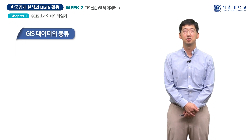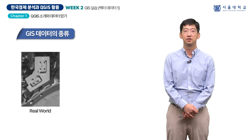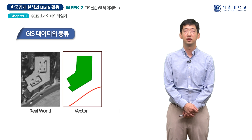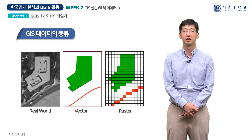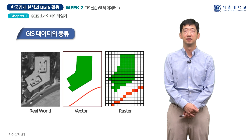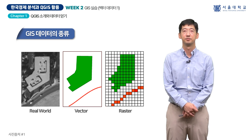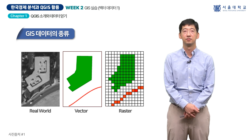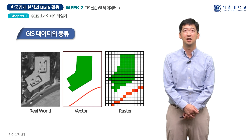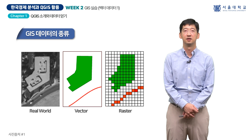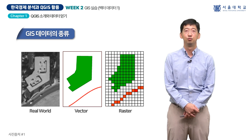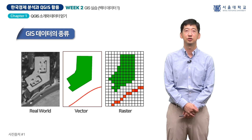GIS 데이터는 대체로 두 가지 주요한 형식인 벡터 데이터와 라스터 데이터로 나뉩니다. 둘 다 공간 데이터를 표현하는 데 사용되지만 각각의 특성과 용도가 다릅니다. 벡터 데이터는 점, 선, 다각형 등의 기하학적 형태로 데이터를 표현합니다. 각 기하학적 객체는 위치 정보를 포함하고 있고 일반적으로 쉐이프 파일이라는 파일 형식으로 저장됩니다.